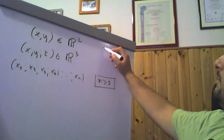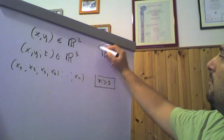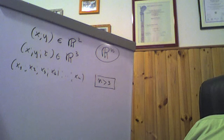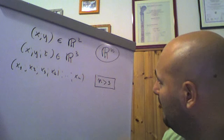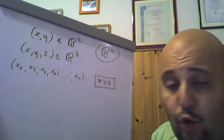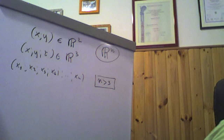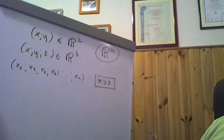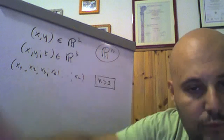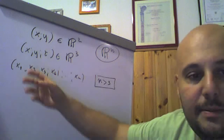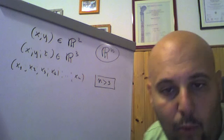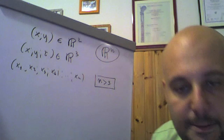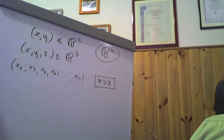Lo spazio euclideo a n dimensioni si indica con il simbolo Rⁿ. Questo spazio va inteso come la totalità delle n-uple ordinate di numeri reali, nella quale si introdurranno dei concetti analoghi a quelli che nei casi di funzione di una variabile, con x, (x,y), (x,y,z), sono praticamente la base della geometria euclidea. Si parla appunto di spazio euclideo.